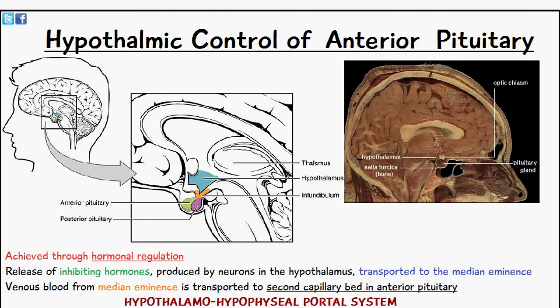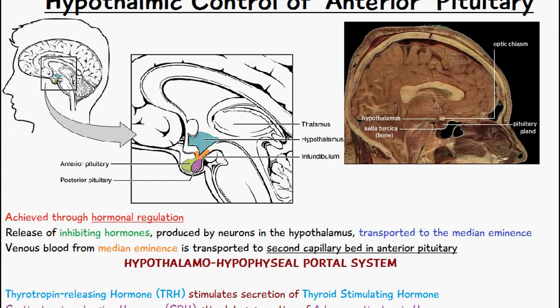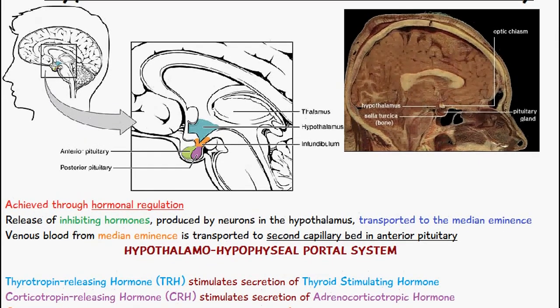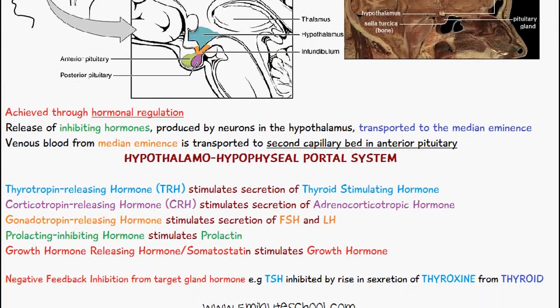We have the release of inhibiting hormones produced by neurons in the hypothalamus and transported to the median eminence. Venous blood from the median eminence is then transported to the second capillary bed in the anterior pituitary. This portal system is known as the hypothalamo-hypophysial portal system, and we have the following hormones which are secreted with their resulting effects.